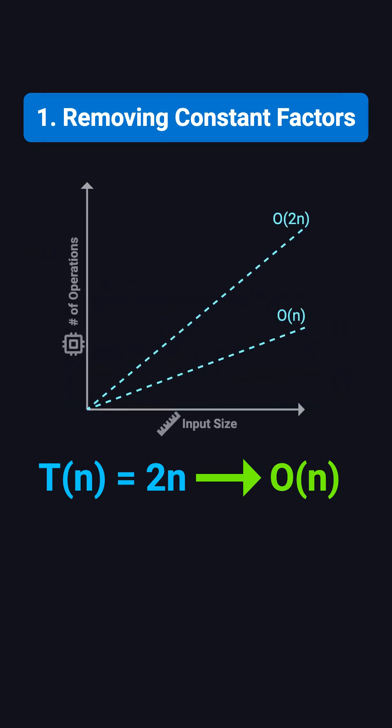Why? Because no matter how fast the algorithm executes, a constant factor doesn't affect the overall growth rate as n becomes very large. Big O cares about how the algorithm scales with the problem size, not the exact number of operations.